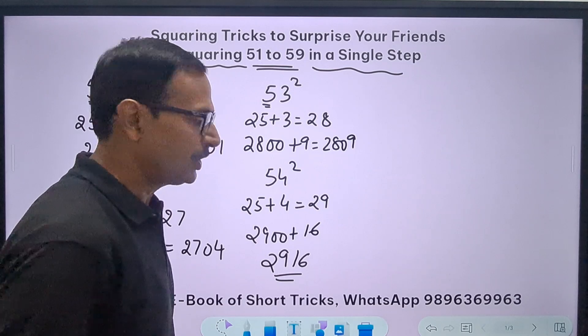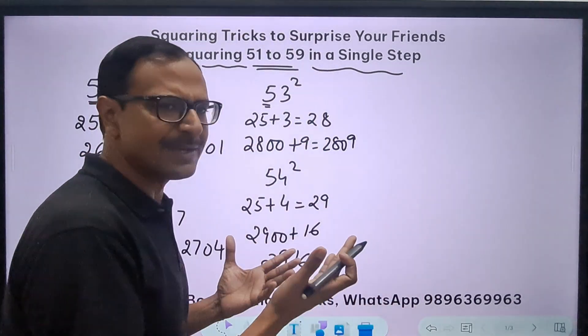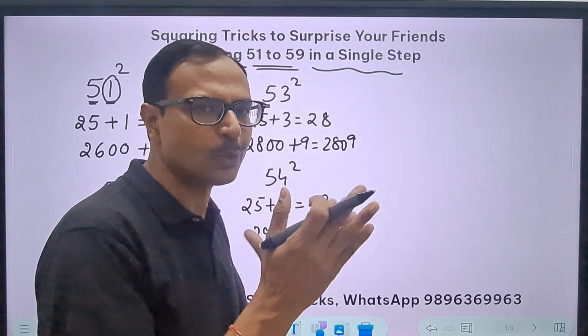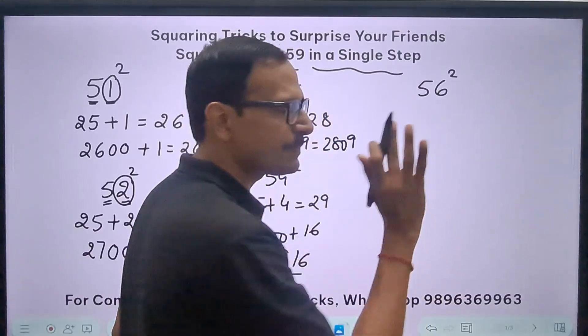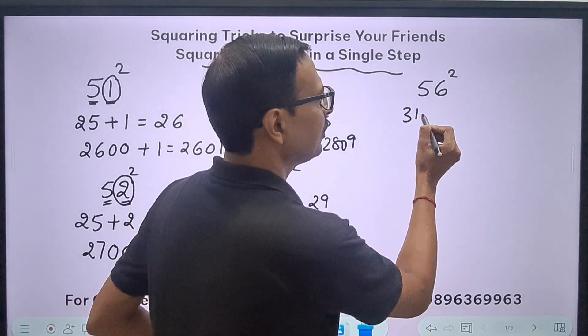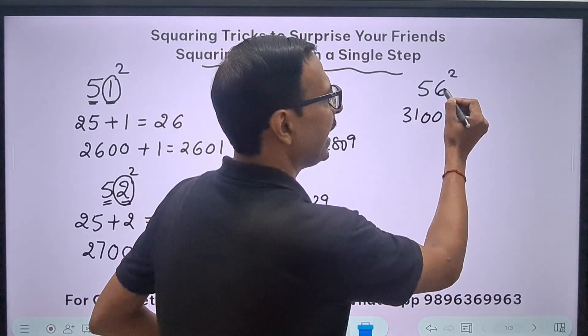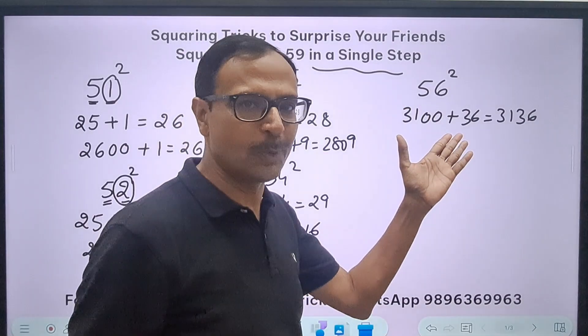You want to skip more steps? Watch. So 55 is pretty easy right? 5 times 6 is 30, so 3025. Now 56 square - see I will skip more steps now - 25 plus 6 is 31, followed by 2 zeros, and add 6 square 36, you get 3136.